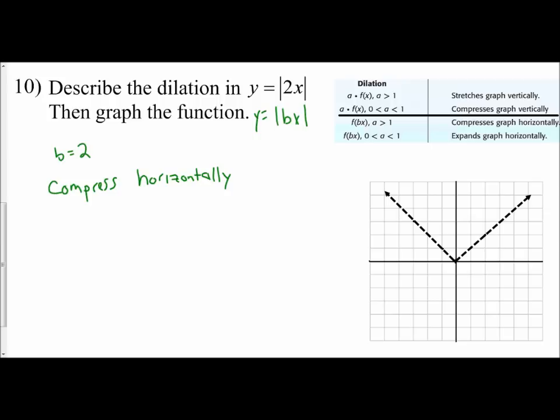Now we graph the dilation using the idea of slope. It will compress horizontally—imagine being smashed in from left and right. Starting at (0,0), with coefficient 2, we go up 2, right 1, repeating this pattern. Then follow the pattern on the left of the y-axis: up 2, left 1, continuing this pattern.